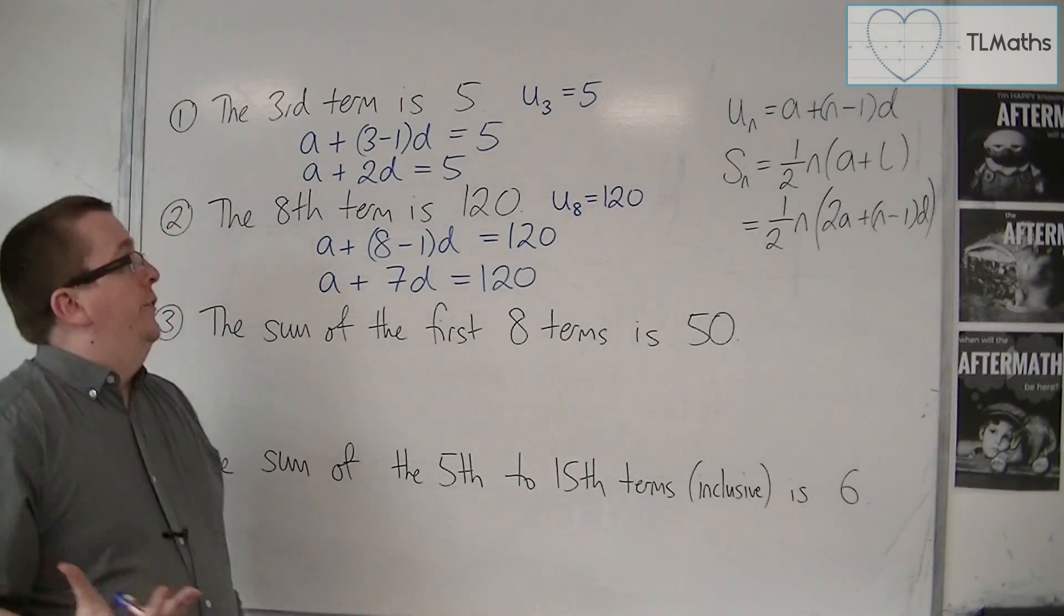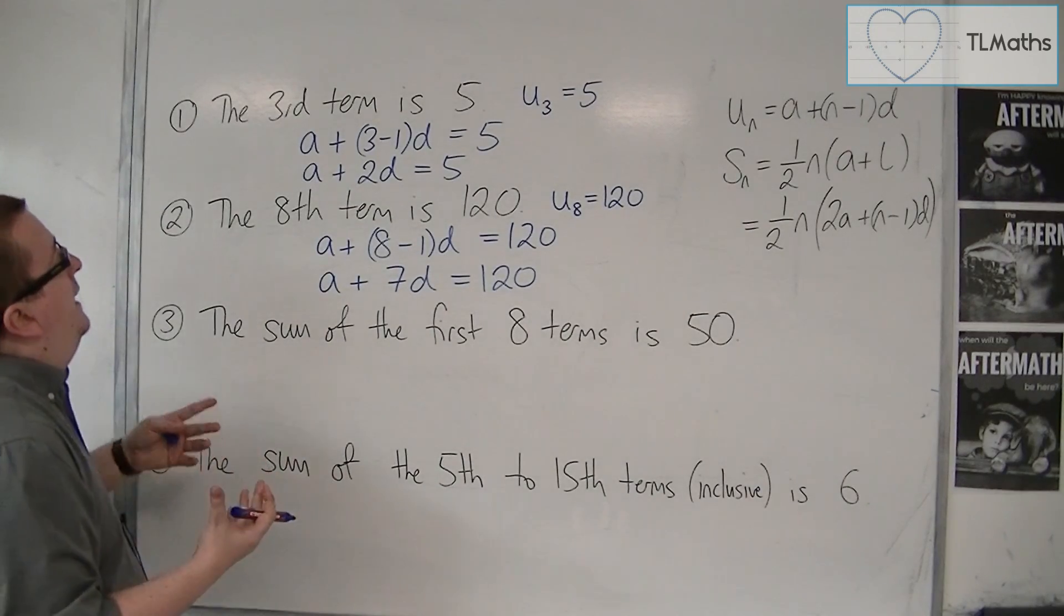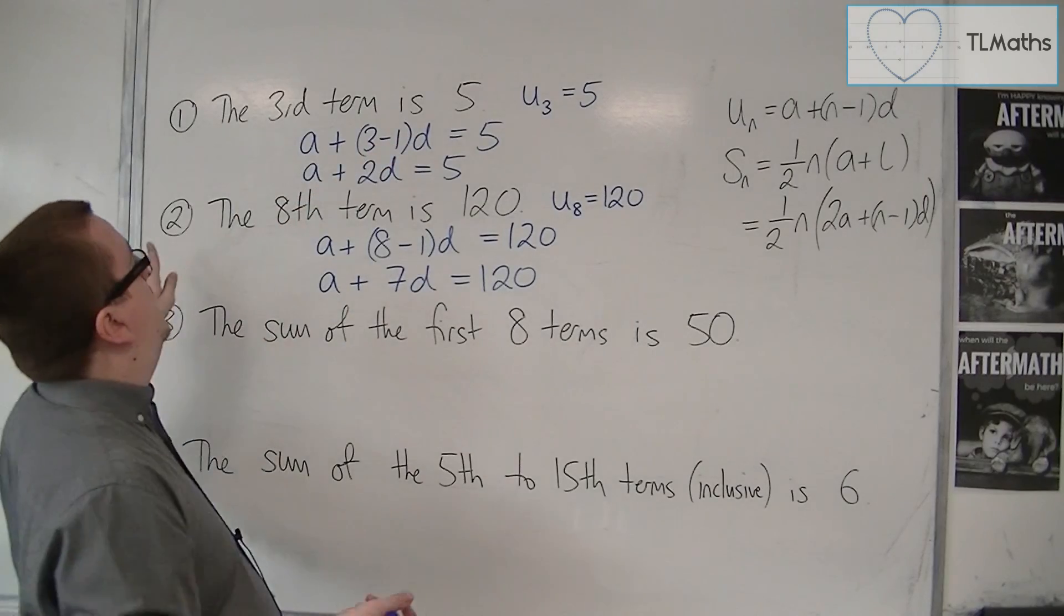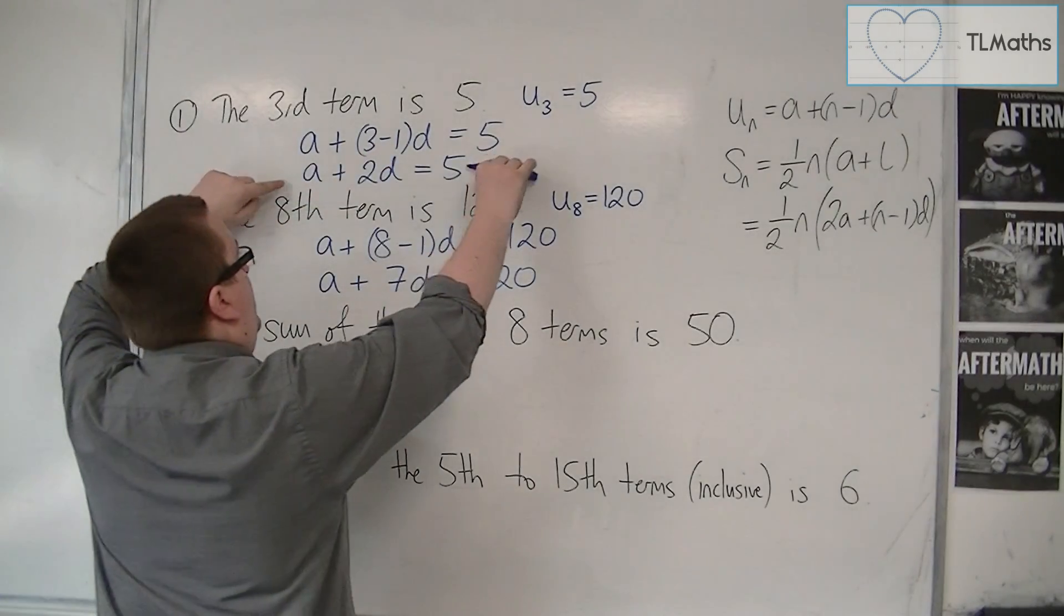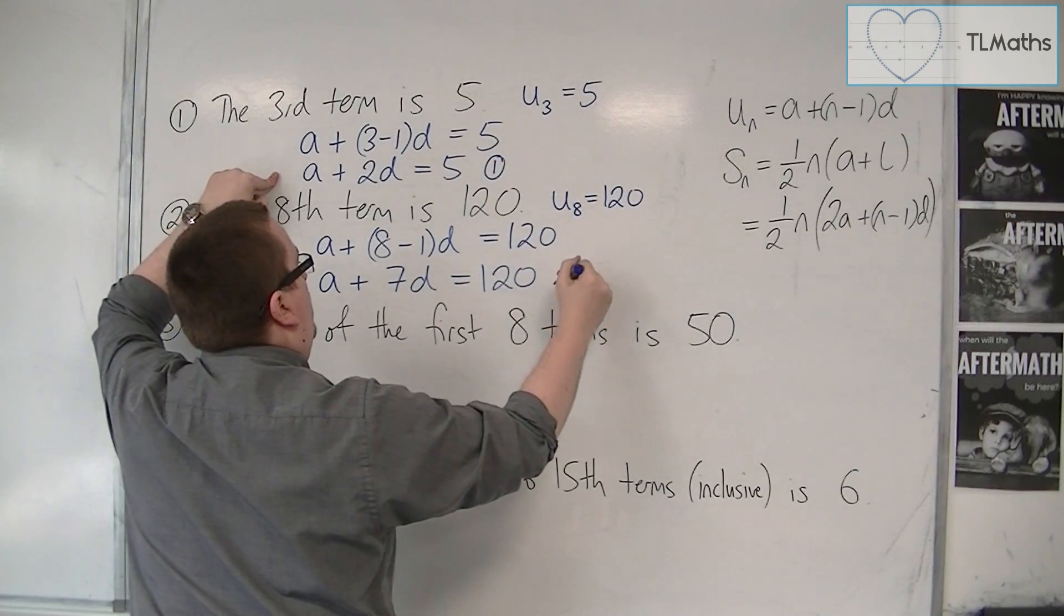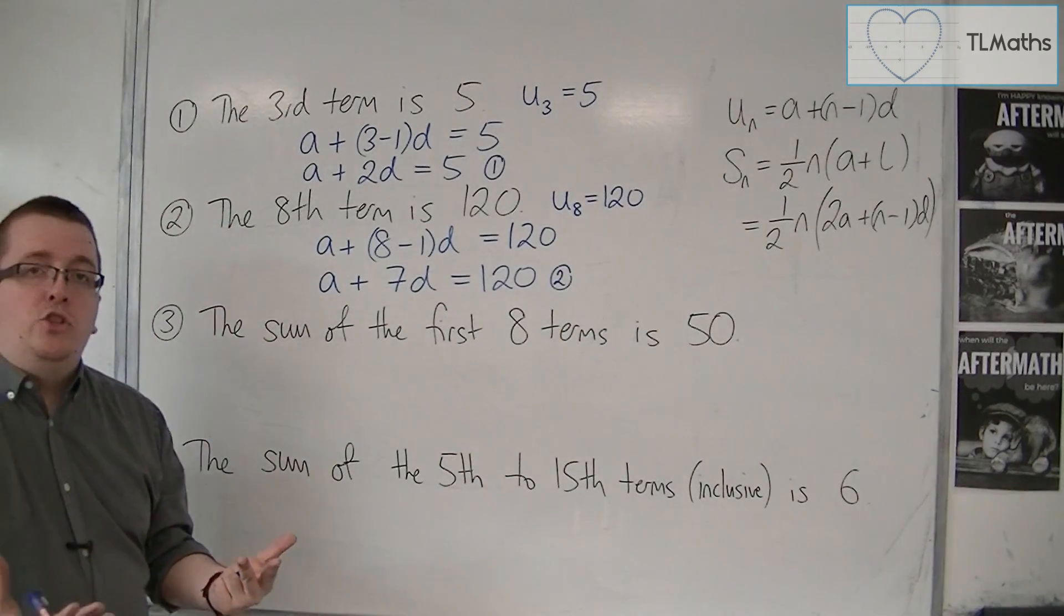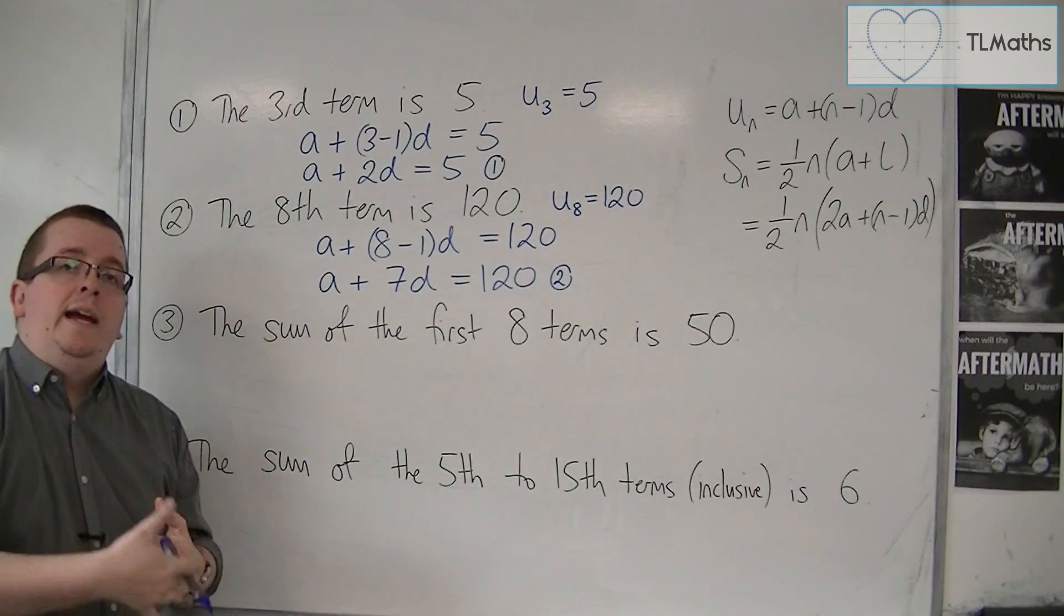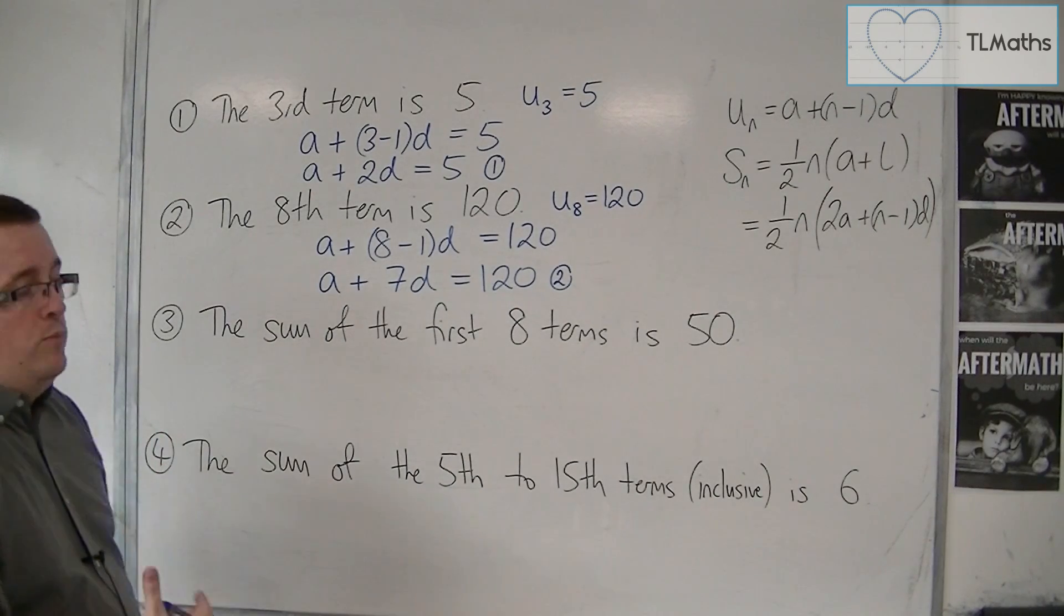Now, if this was an exam question, and I've been told the third term is 5 and the eighth term is 120, and I got down to these two equations, I could then put this as equation 1 and that as equation 2, and then use simultaneous equations to work out the value of a and D. So that is the process that we're really practicing here.